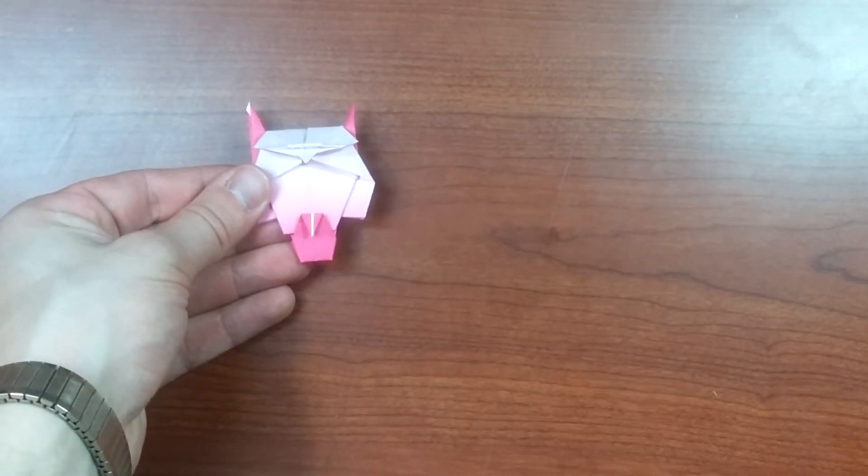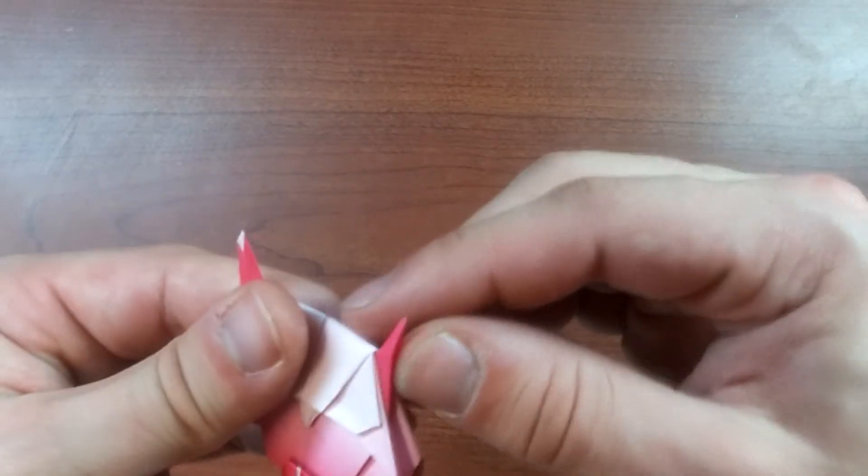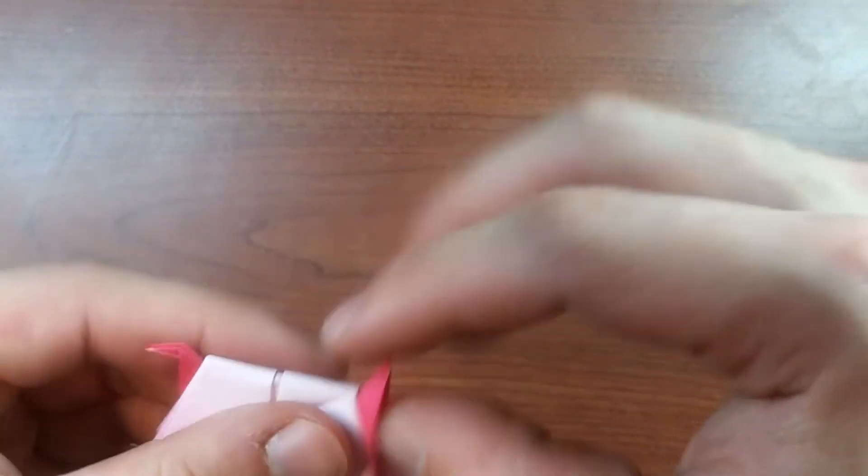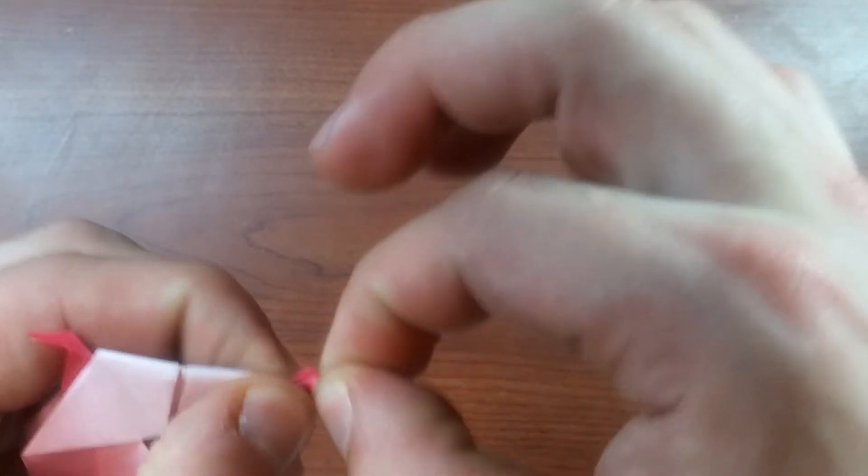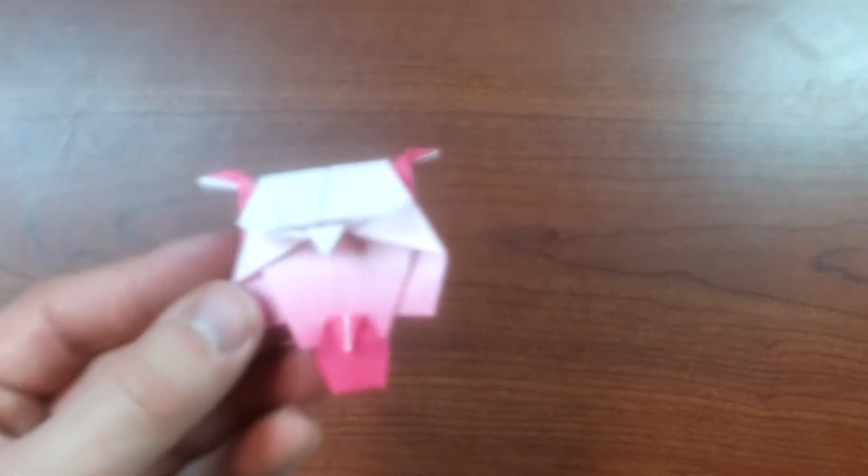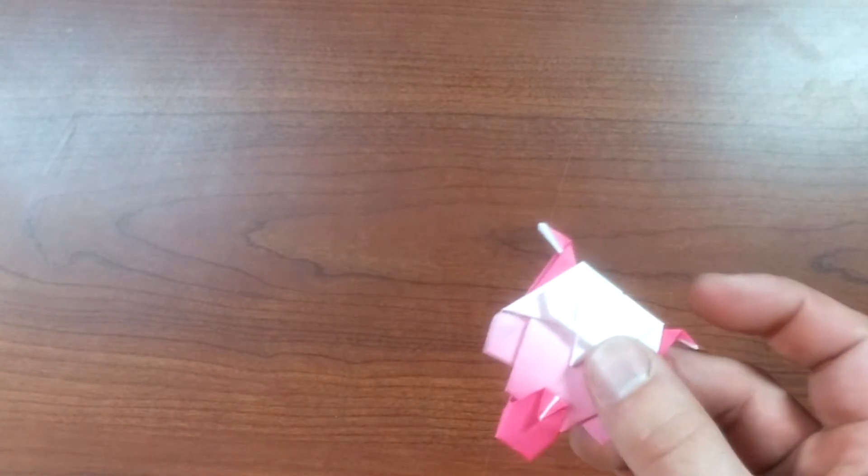Flip her back over. And the last step is to fold down the ears. So, let's do that. Fold them, inside reverse fold them however you want. It is up to you. I'm going to do this. All right. And we're done. The owl is finished. Let me show you how to make the tree.